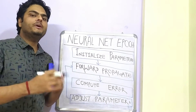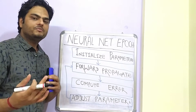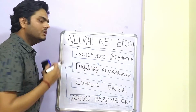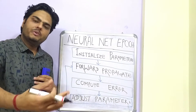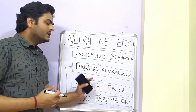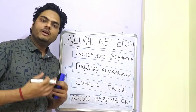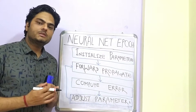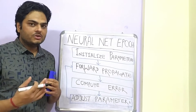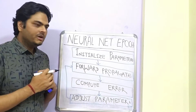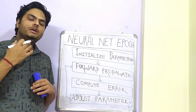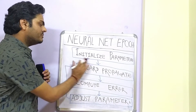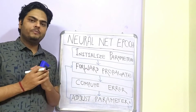Step 1: initialize the parameters — the weights and biases. Step 2: forward propagate. Step 3: compute the error of the model. And step 4: adjust the parameters based on the error of the model. These are the steps of an epoch at a high level, and then forward propagation repeats again.